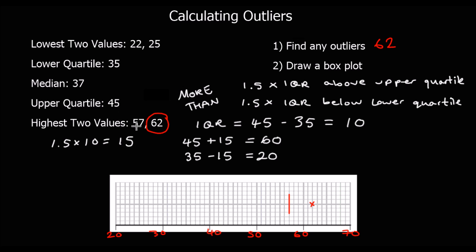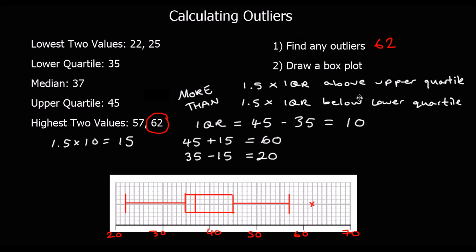And we draw the rest of the box plot as usual. The upper quartile is 45, the median is at 37, the lower quartile is 35, and the lowest value is 22. So we join them up with a box and the two whiskers. And there we have our box plot.